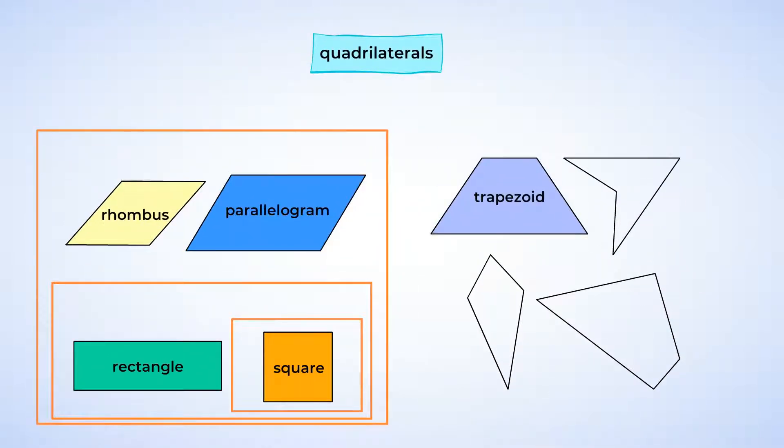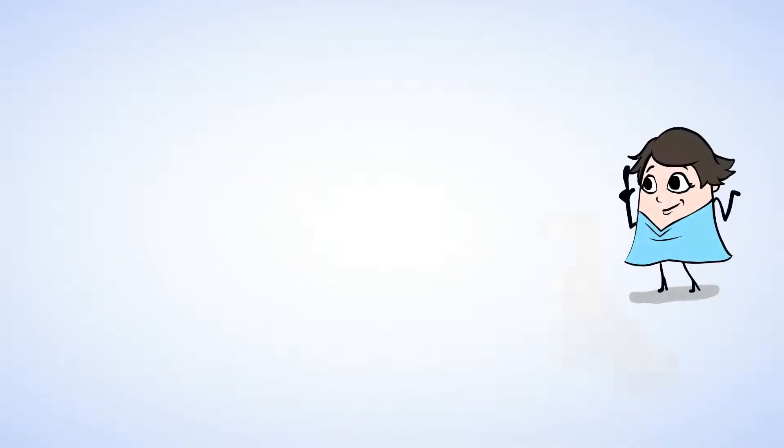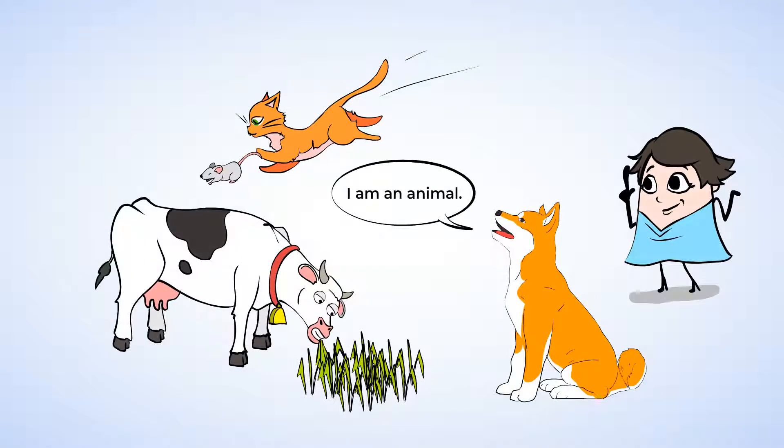This is like how all rectangles are quadrilaterals, but not all quadrilaterals are rectangles. In non-math terms, all dogs are animals, but not all animals are dogs.